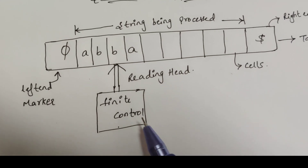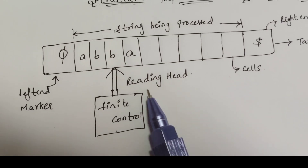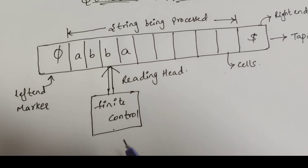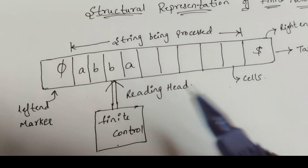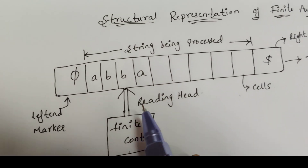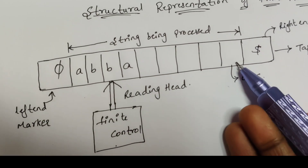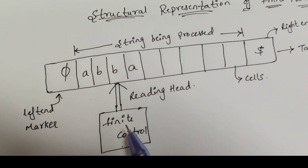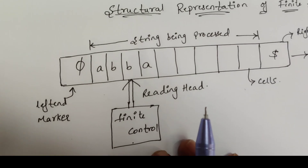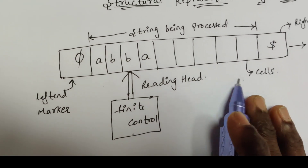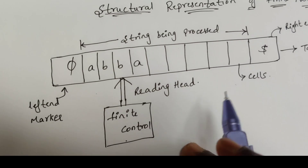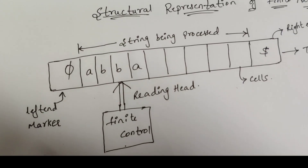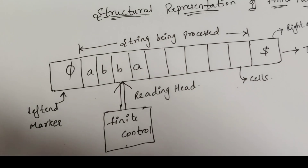The finite control is responsible for controlling the total functioning of the finite automata machine. It decides which input symbol is to be read next and where to move — either to the left or to the right. The input to the finite control is usually the input symbol from the input tape or the present state of the machine. The output may be the movement of the read or write head along the tape to the next left square or to a null state.